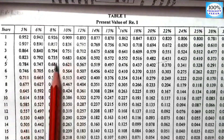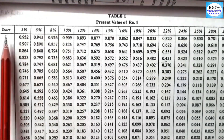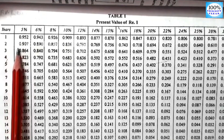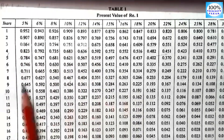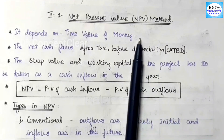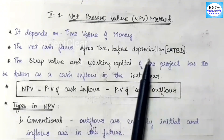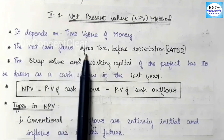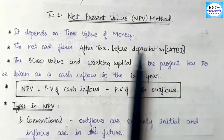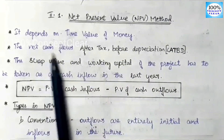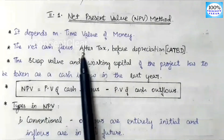When we use the net present value method, we will use cash flow after tax and before depreciation. There is a tax amount included, but depreciation is excluded. We will calculate the net present value using this cash flow format.